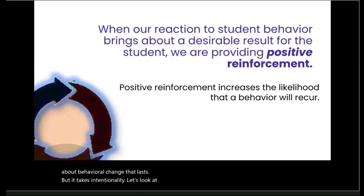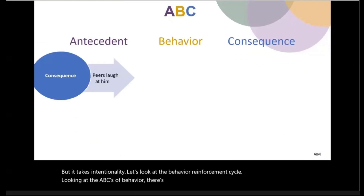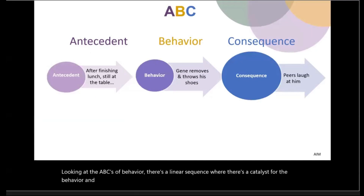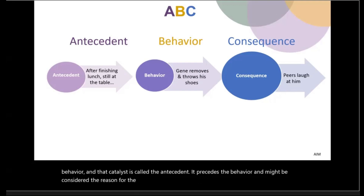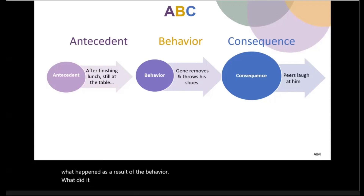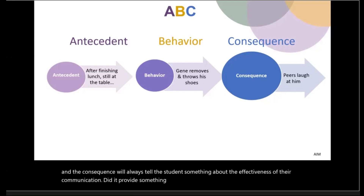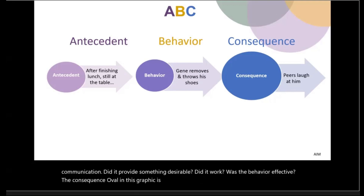Let's look at the behavior reinforcement cycle. Looking at the ABCs of behavior, there's a linear sequence where there's a catalyst for the behavior called the antecedent. It precedes the behavior and might be considered the reason for the behavior. Following that antecedent is the behavior, which is born as a reaction to it. After the behavior comes the consequence — what happened as a result. What did it accomplish? The behavior is always communicating something about the antecedent, and the consequence will always tell the student something about the effectiveness of their communication. The consequence oval in this graphic is larger than the others because this is the domain of reinforcement.